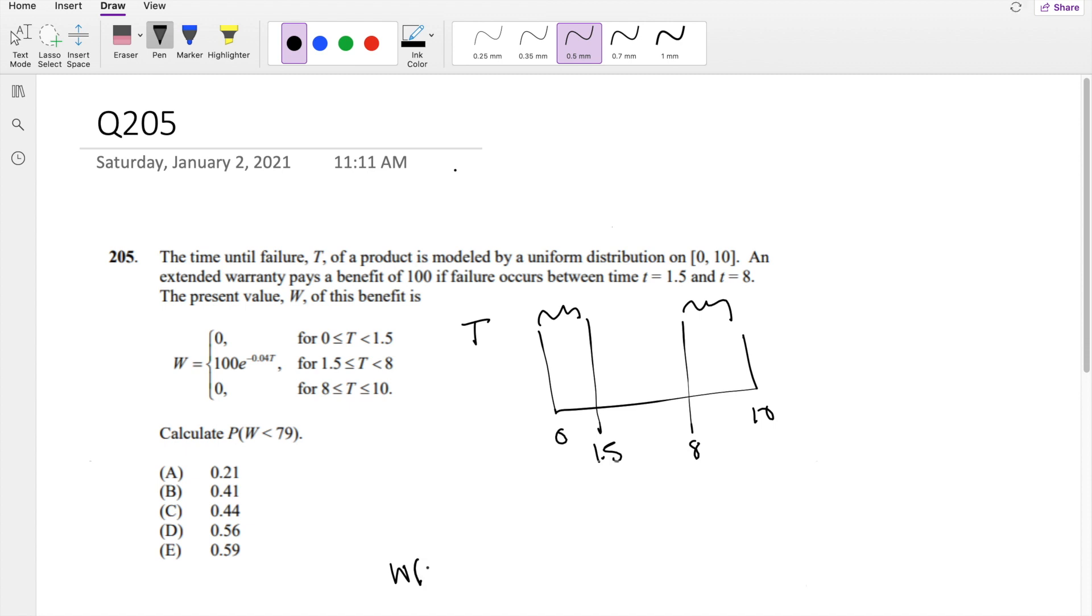Let's figure that out. When benefit equals 0, we know the probability density for a uniform distribution is 1 over B minus A, where B equals 10 and A equals 0. So this is 1 over 10 because it's uniform. What's the area of that?